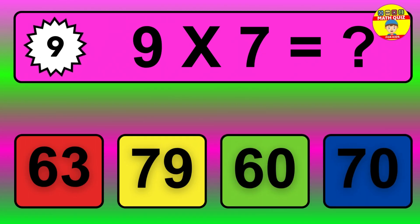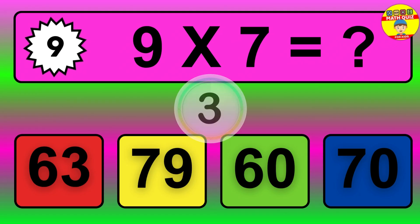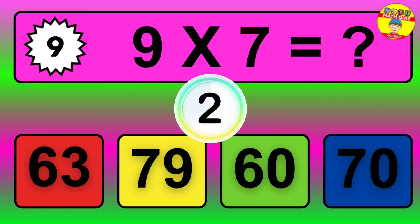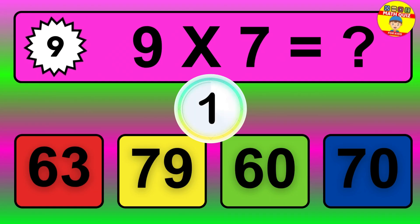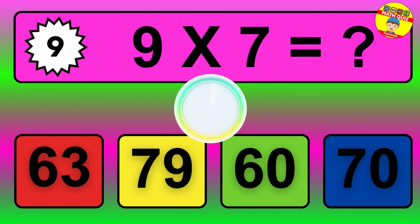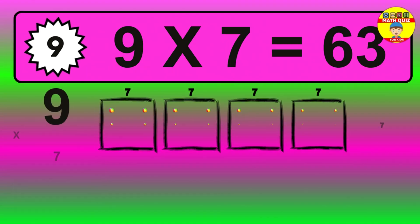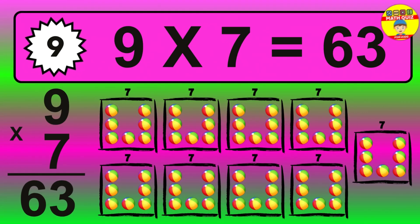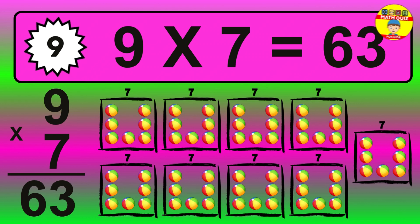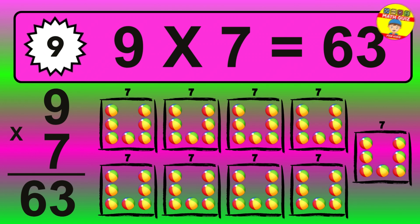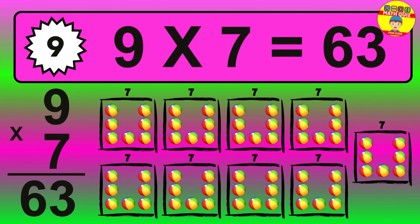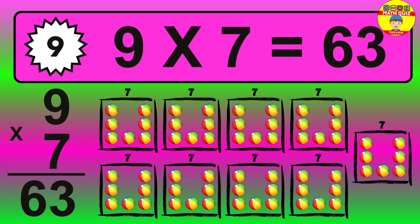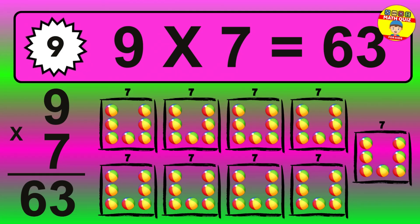Question 9. 9 times 7 equals what? The answer is 9 times 7 is 63. To calculate, we have 9 groups with 7 balls each one. So, how many balls do we have? 63 balls.